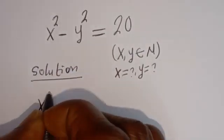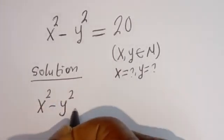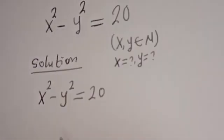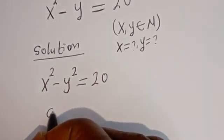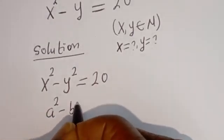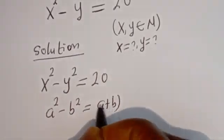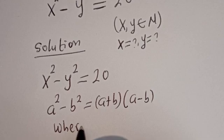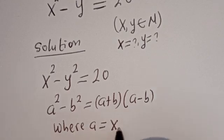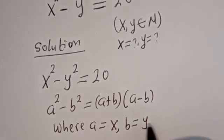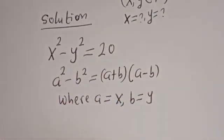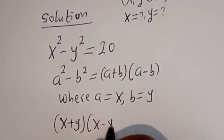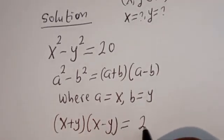We have x squared minus y squared is equal to 20, and we are looking for the values of x and y. Taking note that a squared minus b squared is equal to (a plus b)(a minus b), where a equals x and b equals y, this can be written as (x plus y)(x minus y) is equal to 20.